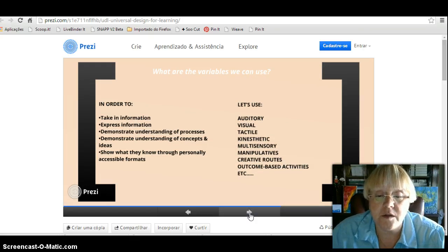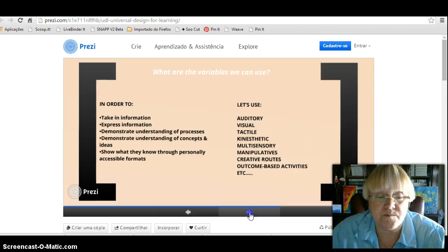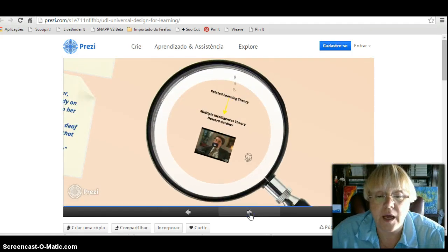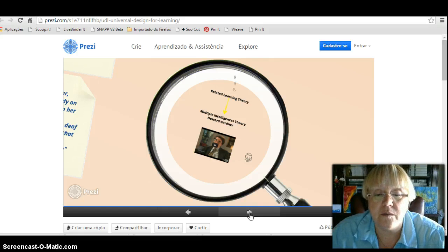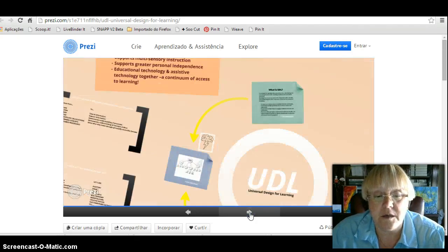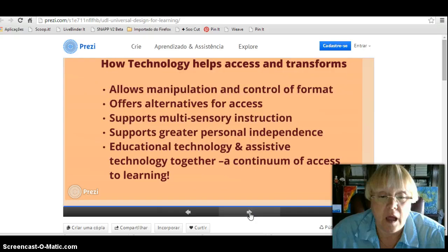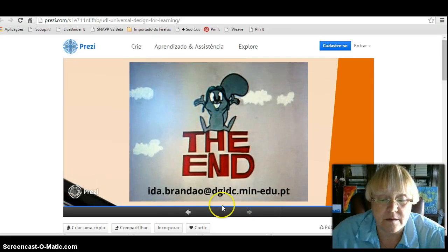And variables that can be used: auditory, visual, tactile, kinesthetic, multi-sensory, manipulatives, creative rules, outcome-based activities. We have here in this topic a reference to multiple intelligence theory of Howard Gardner and how technology helps access and transforms. And that's it.